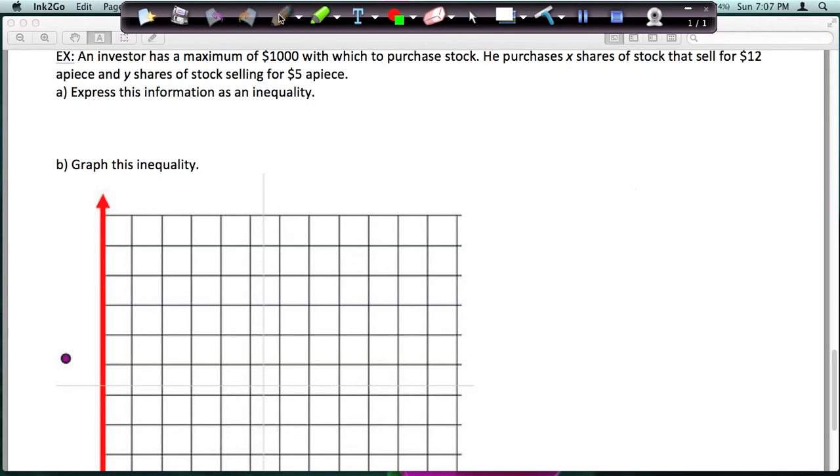Let's do an applied problem. We're going to look at an investor who has a maximum of $1,000 with which to purchase stock, and he's going to purchase X shares of stock that sell for $12 and Y shares that sell for $5. And we want to express this information as an inequality.